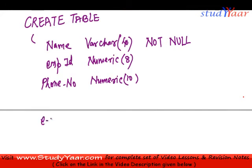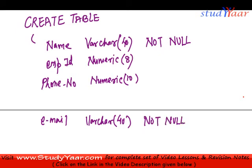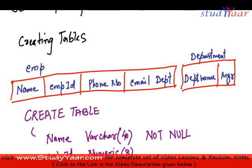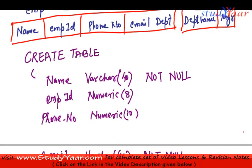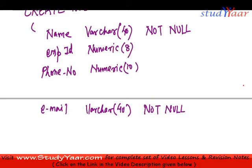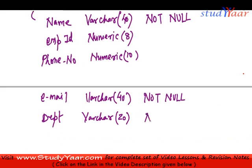Next I have email. Email would be VARCHAR(40) and I would say it is NOT NULL. After that we have department, which I would say is VARCHAR(20) and also NOT NULL.